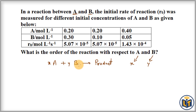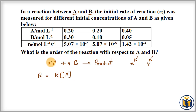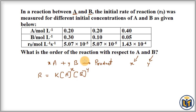For this chemical reaction we can write down the rate law. Rate is equal to K, the rate constant, multiplied by the product of reactants raised to the power of their respective coefficients. The coefficient for A is X and for the other reactant B the coefficient is Y. This is the rate law expression for this chemical reaction.